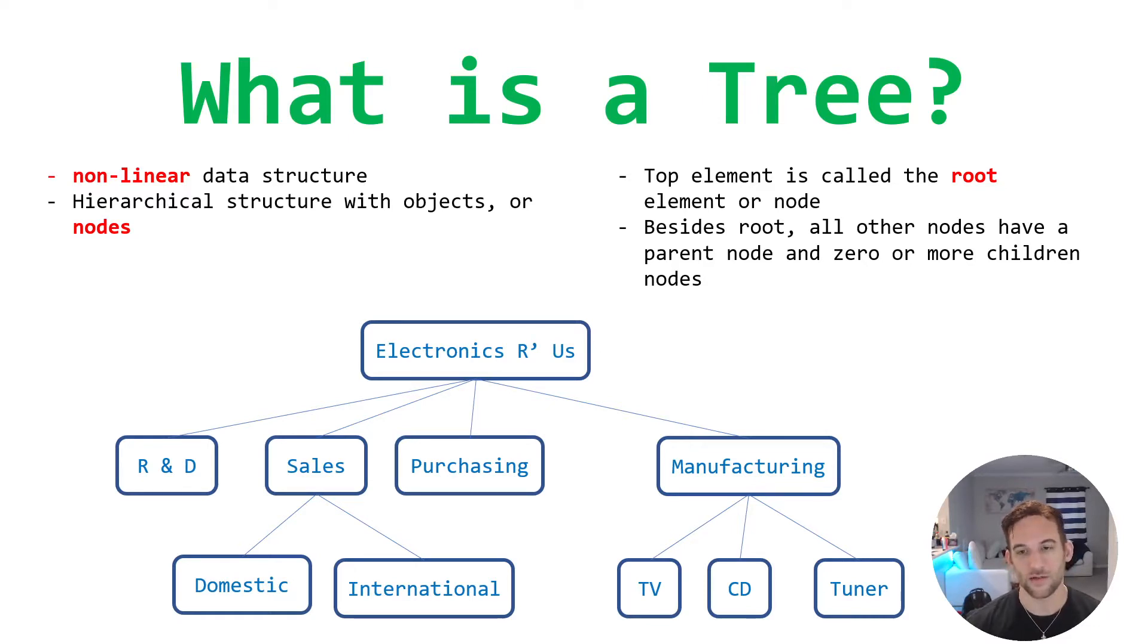And each of these elements, like Electronics R Us, sales, purchasing, these are called nodes within a tree. There are some really common ones that you can probably think of, like file systems, websites even have them, databases use this, GUIs (graphical user interfaces), and a lot of other systems use a tree structure.